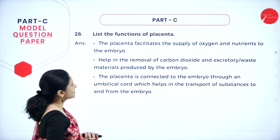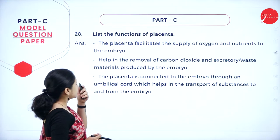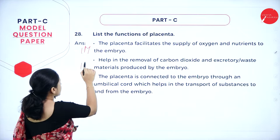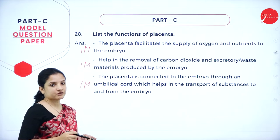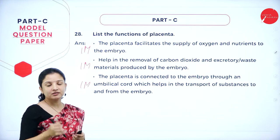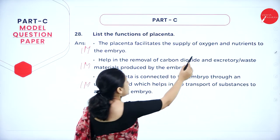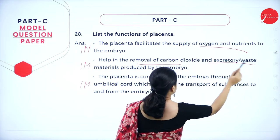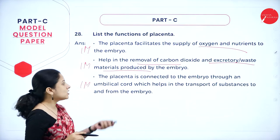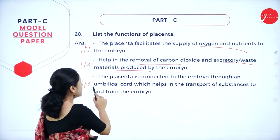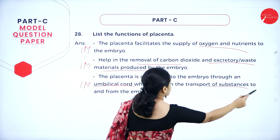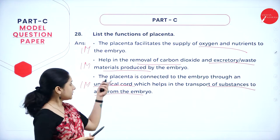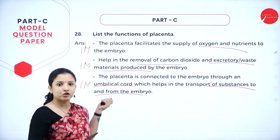Next question: list the functions of the placenta. It is a three-mark question, so write three functions — each fetches one mark. First, the placenta supplies oxygen and nutrients to the embryo. Second, it helps in removing carbon dioxide and excretory waste materials produced by the embryo. Third, it is connected to the embryo through an umbilical cord, which helps in the transport and exchange of food substances between the mother and the embryo.